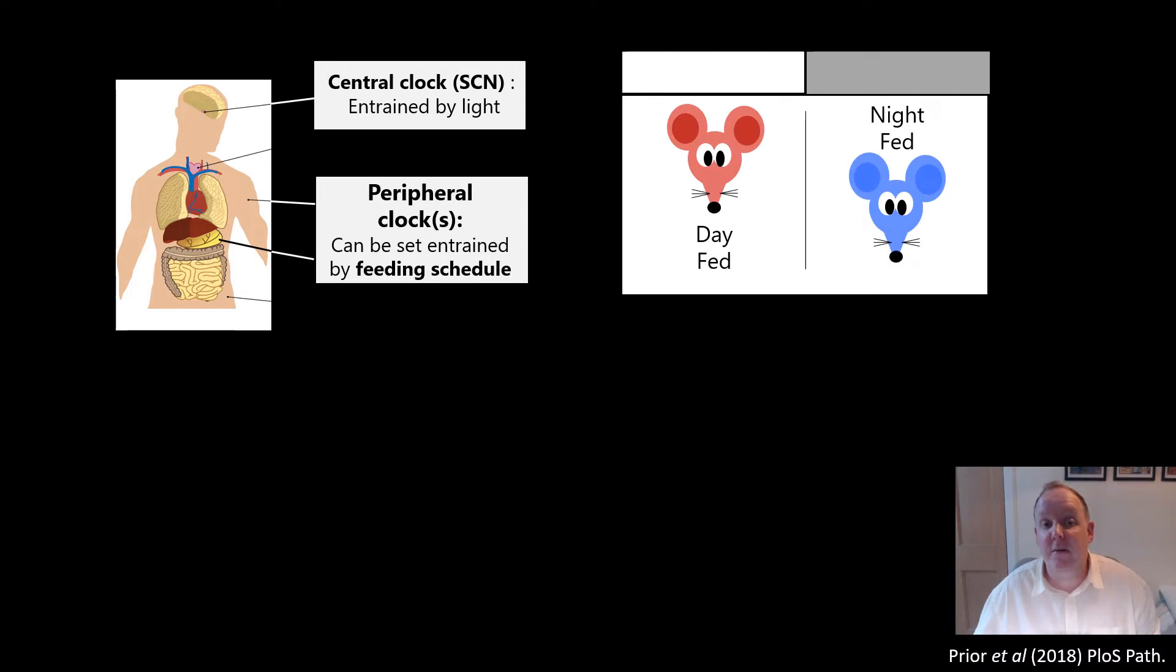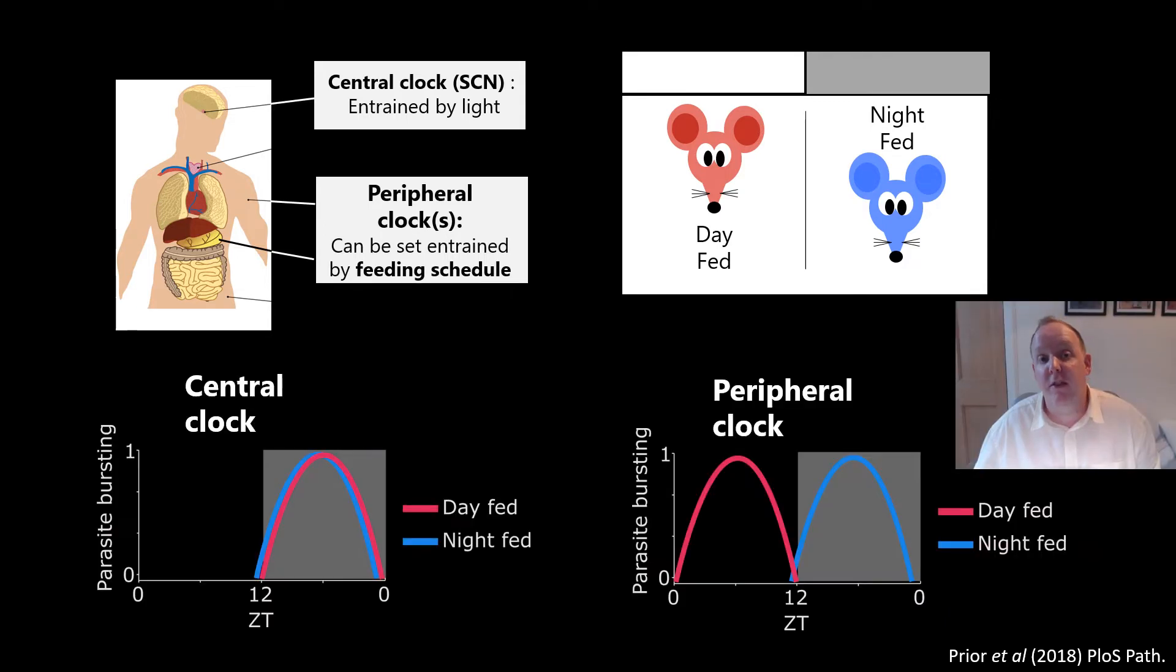So we set up infections in two groups of mice in the same lighting schedule and fed each group on opposite feeding schedules. If the central clock was important, we would expect parasites in both groups to be in phase, since the host shares the same light schedule. If the peripheral clock matters most, then we would expect parasites to be out of phase, matching the feeding schedule.